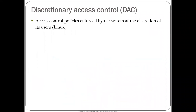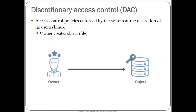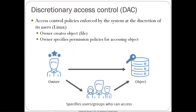The last thing is discretionary access control, which is what you're probably most familiar with if you've used Linux. These access control policies are enforced by the system, but at the discretion of its users. Anytime a user creates something — for example, a file in the file system — they are allowed as the creator to also specify the permission policies for accessing it. You get to set the security of the things that you create. That's Linux.